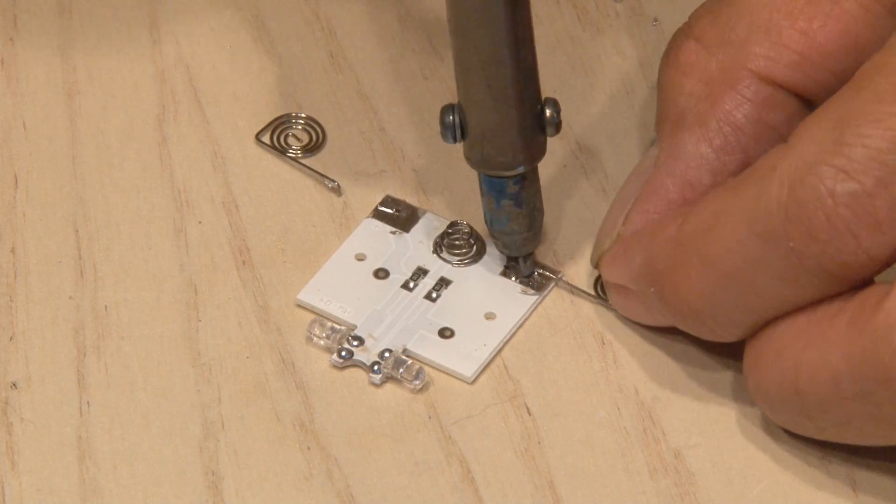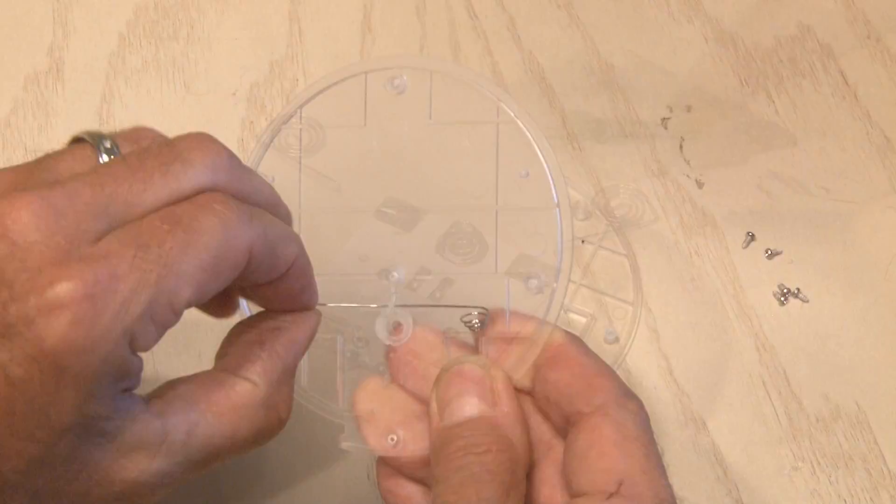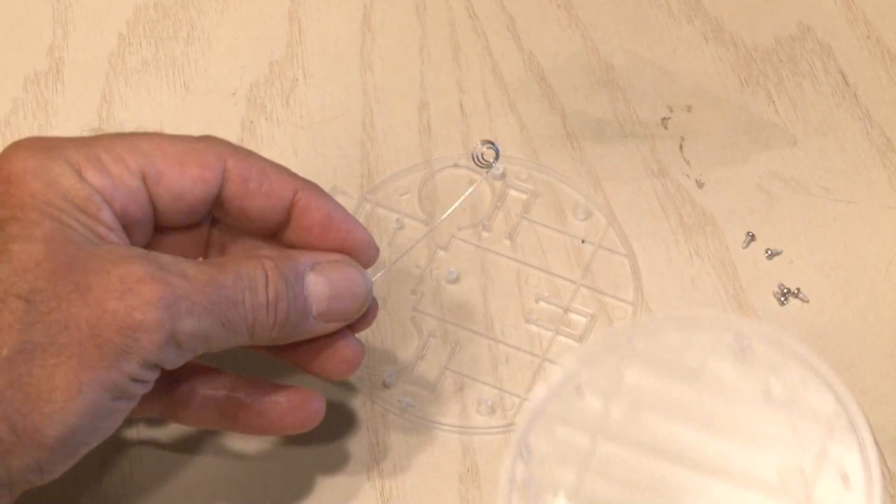Using my solder sucker, I'm going to remove these two little spring contacts. And we'll also hang onto this other longer battery contact wire.